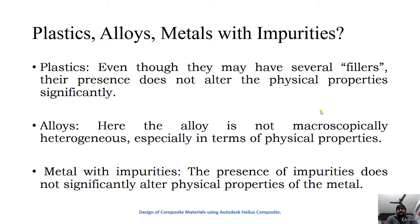Materials like plastics, alloys, or metals with impurities are not called composite materials. Even though there are many fillers present inside plastics, they don't alter the physical properties significantly, and we cannot distinguish them chemically. In alloys, two or more materials are combined at a microscopic scale where atomic bonds are created between the materials.